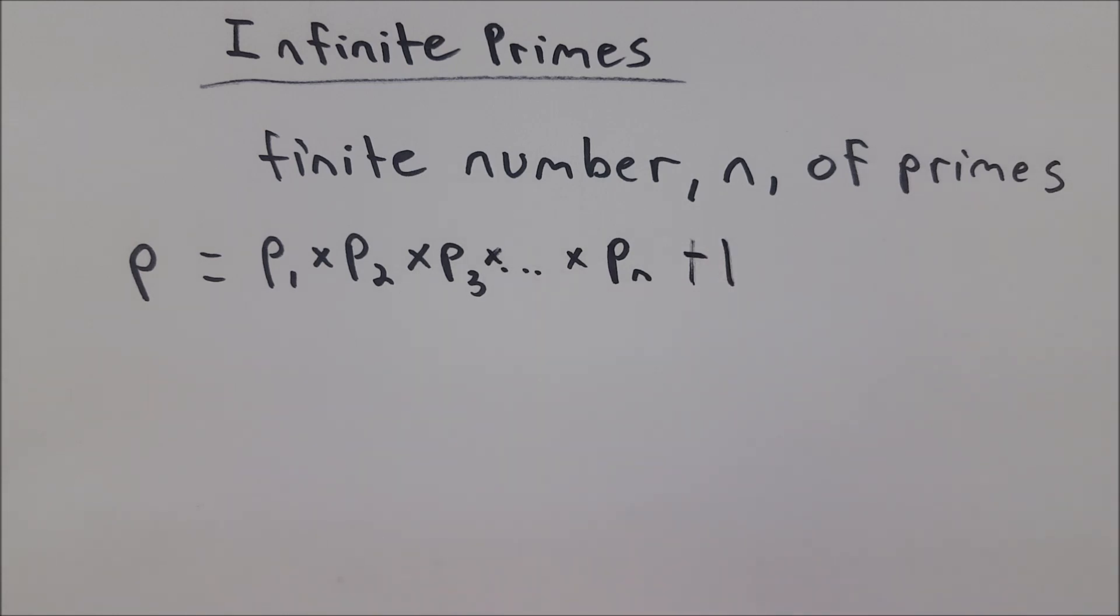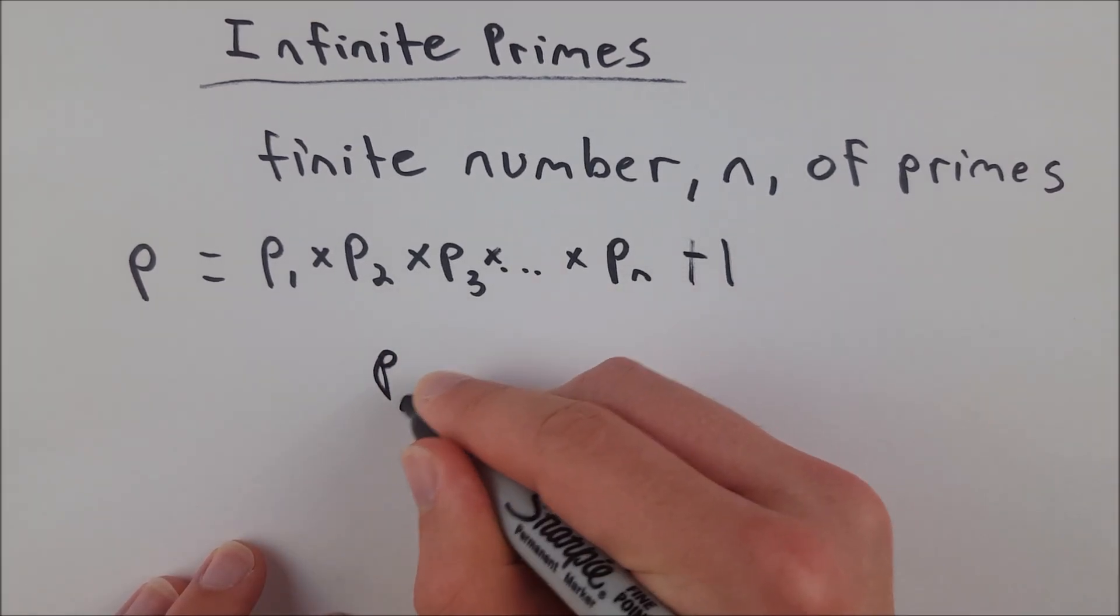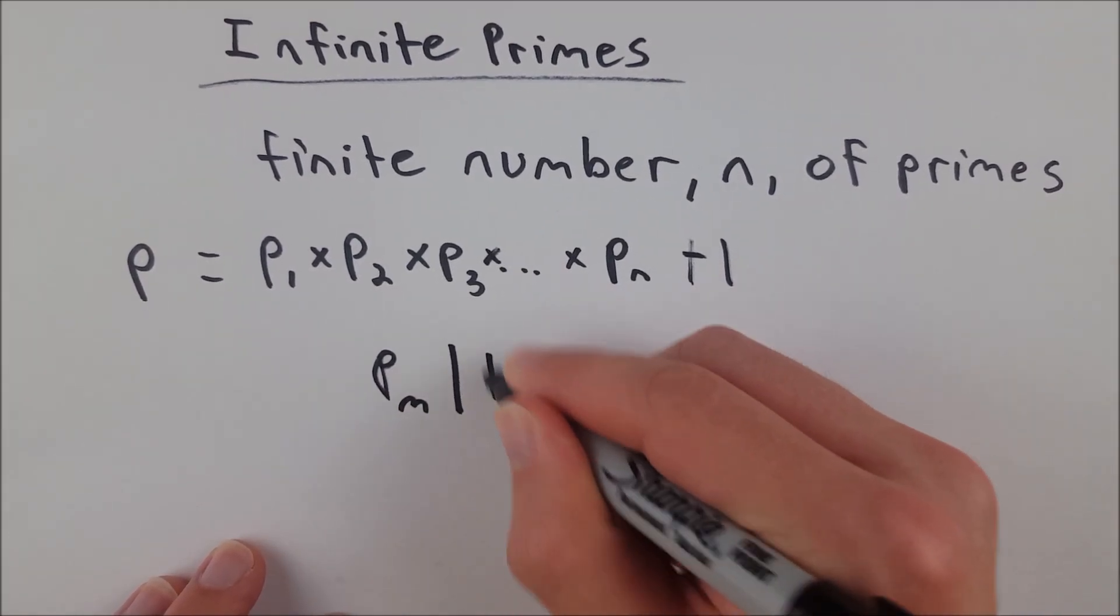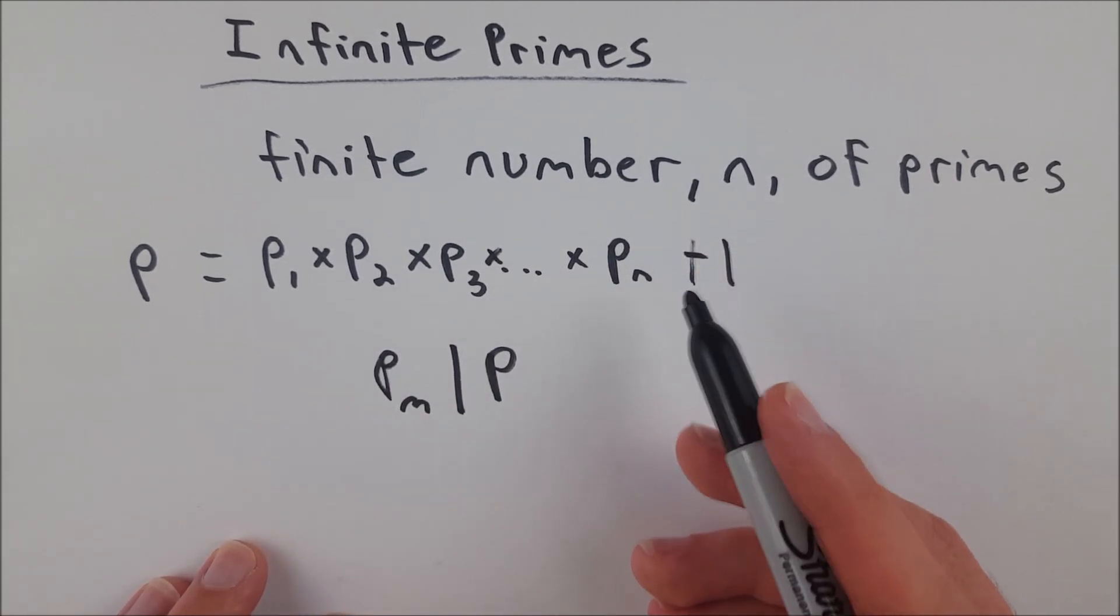Therefore, by the fundamental theorem of arithmetic, it must be divisible by at least one of our primes. So we can say that some prime, p sub m divides our number P.